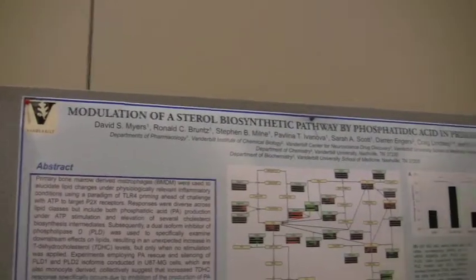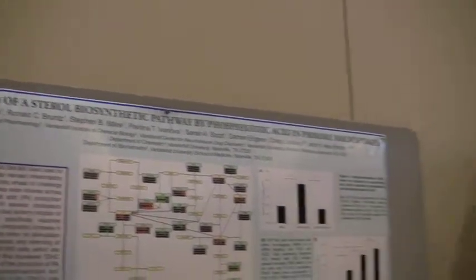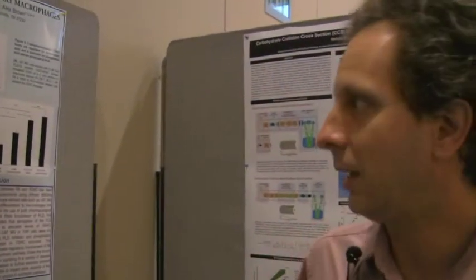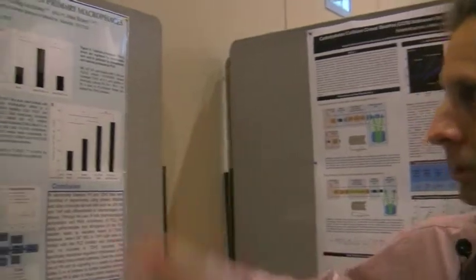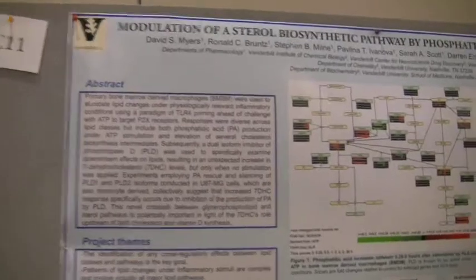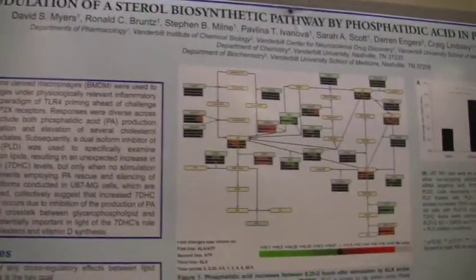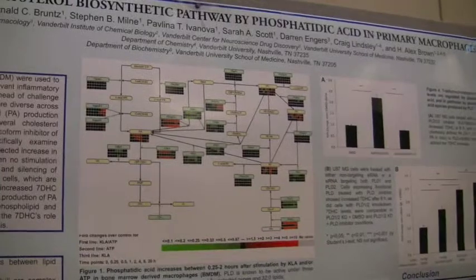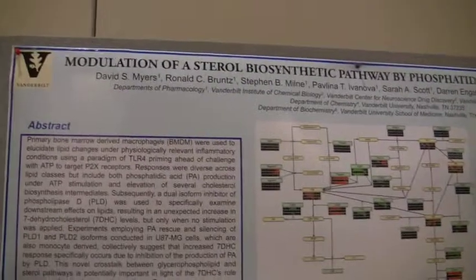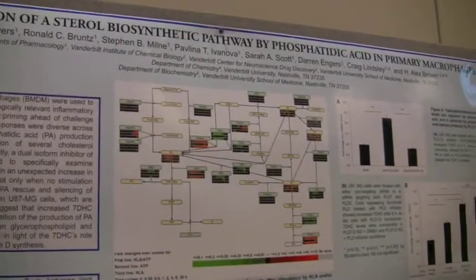This is a project on macrophage stimulation. We did stimulation with two different ligands, one for the TLR4 receptor, one for a P2X7 receptor, and as well did them together. Out of the genomic analysis as well as lipid analysis, we found some patterns that suggested some further experiments with phospholipase inhibitors to try to uncover any crosstalk we could between the glycerophospholipid and the sterol subsystems.